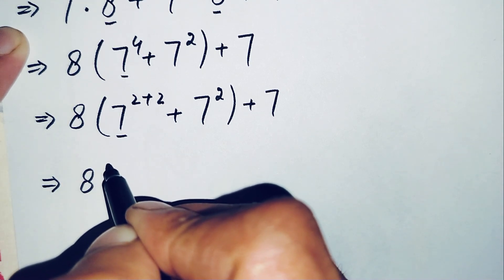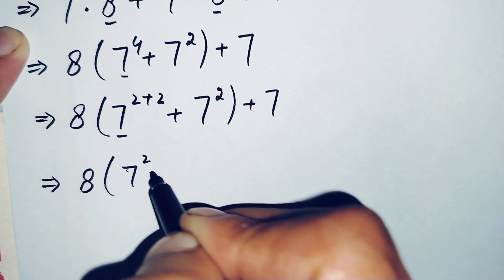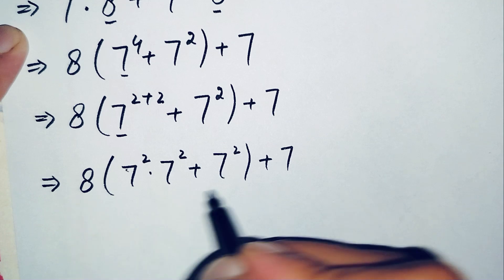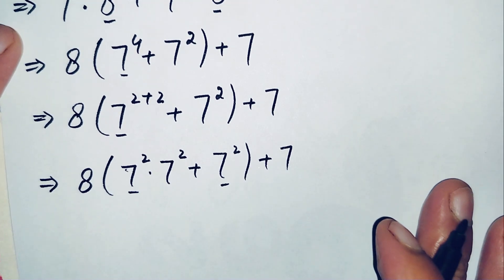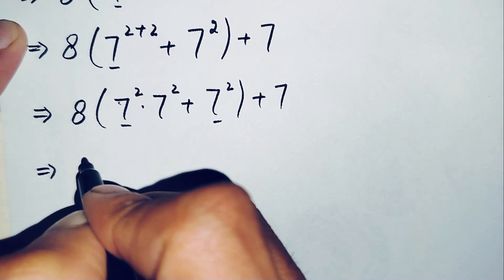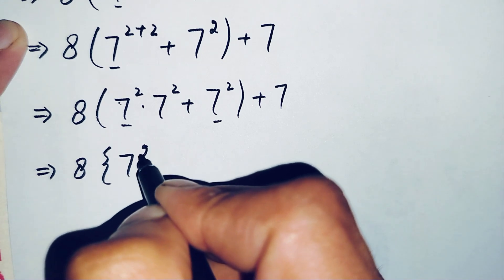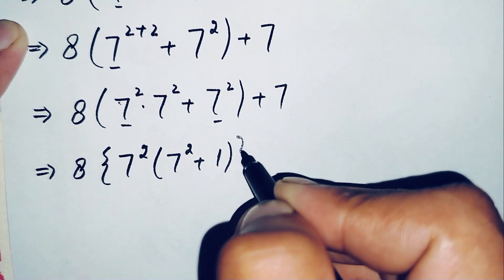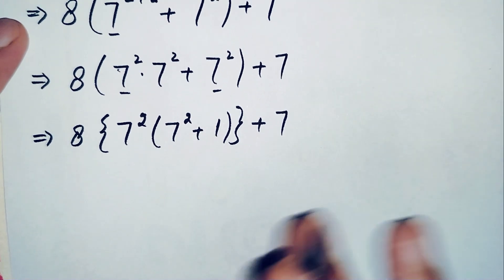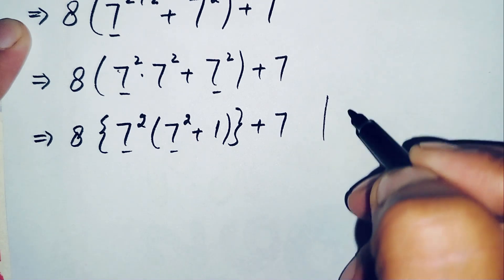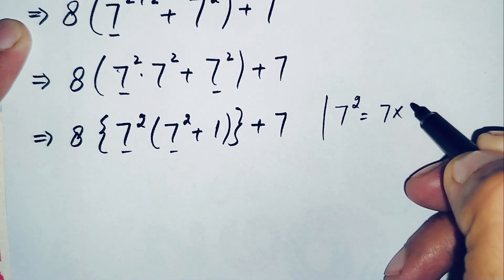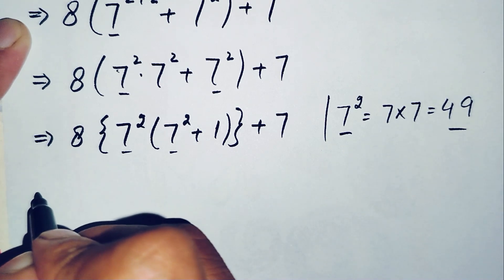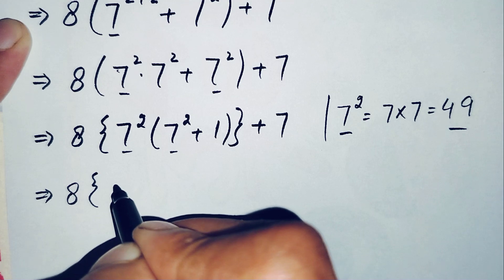This gives us eight times the quantity seven squared times seven squared, plus seven squared, plus seven. We then factor out seven squared from the first two terms inside the brackets, getting seven squared times the quantity seven squared plus one, plus seven. Since seven squared equals forty-nine, we replace it accordingly.